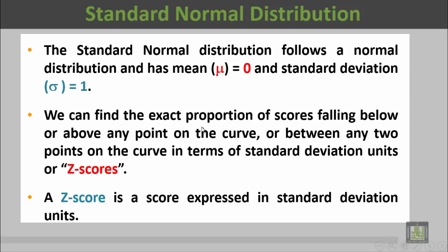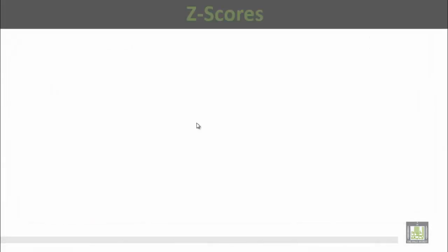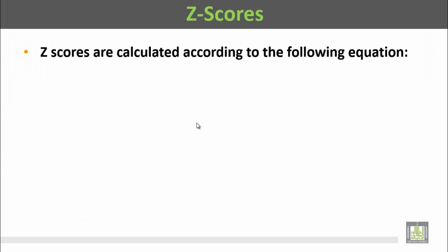We can find the exact proportion of scores falling below or above any point on the curve, or between any two points on the curve, in terms of standard deviation units or z scores. أي قيمة على منحنة التوزيع الطبيعي المعياري يمكن تحويلها إلى مقدار من الانحراف المعياري من خلال z scores. A z score is a score expressed in standard deviation units.